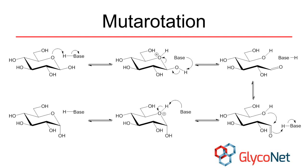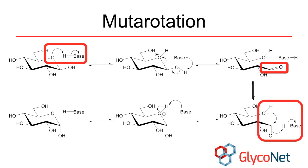Sugars convert between their various forms through a process called mutarotation. Let's look at a few key mechanistic steps. First, the ring oxygen is protonated, which is followed by ring opening and the formation of a carbonyl. In this open chain form of the sugar, the carbonyl can rotate to allow for nucleophilic attack on its other face. Following a deprotonation step, we now have a different anomer of our original molecule.